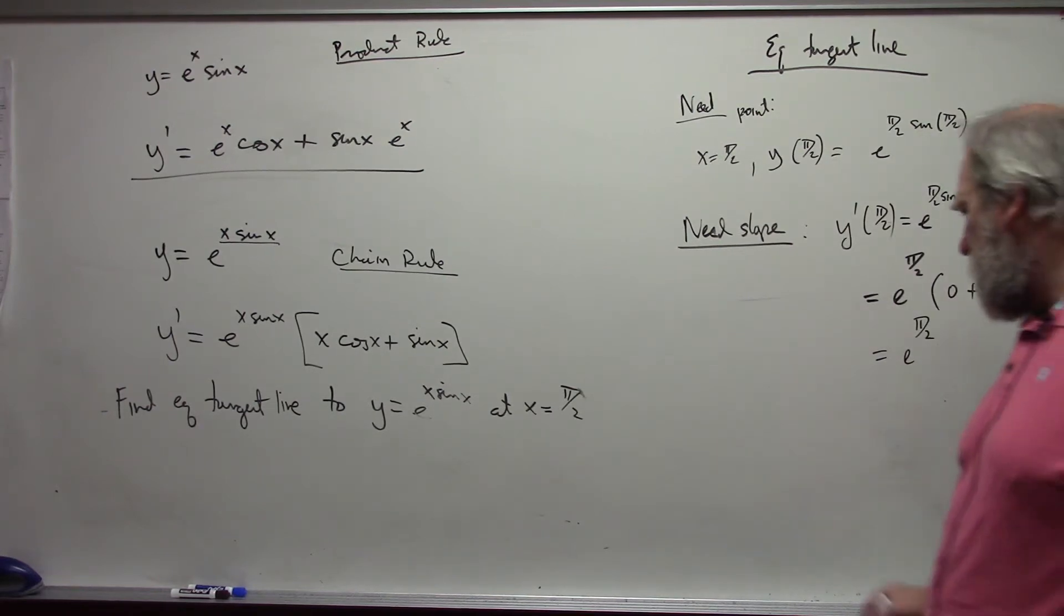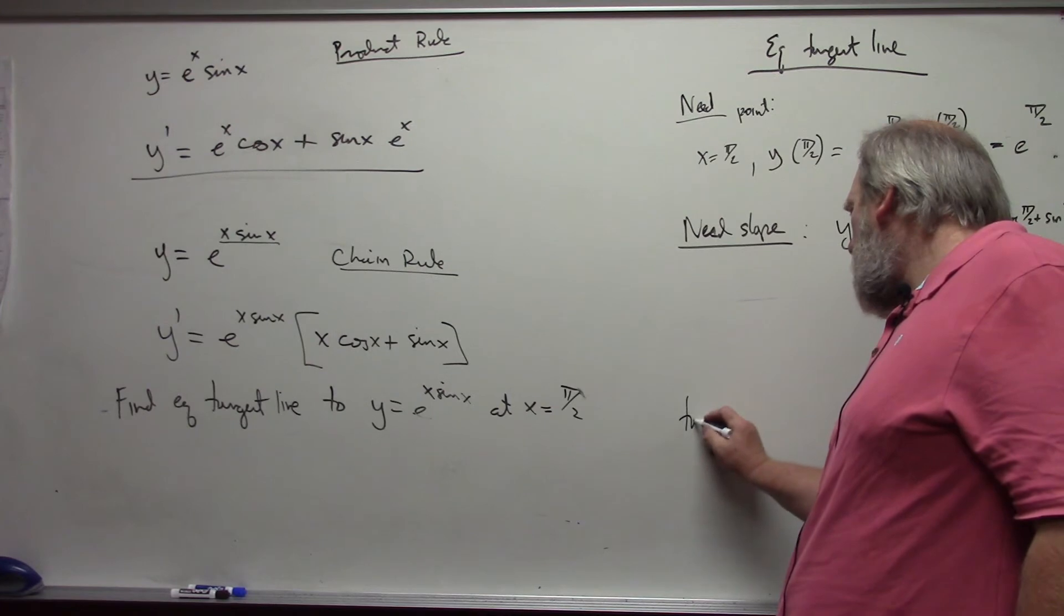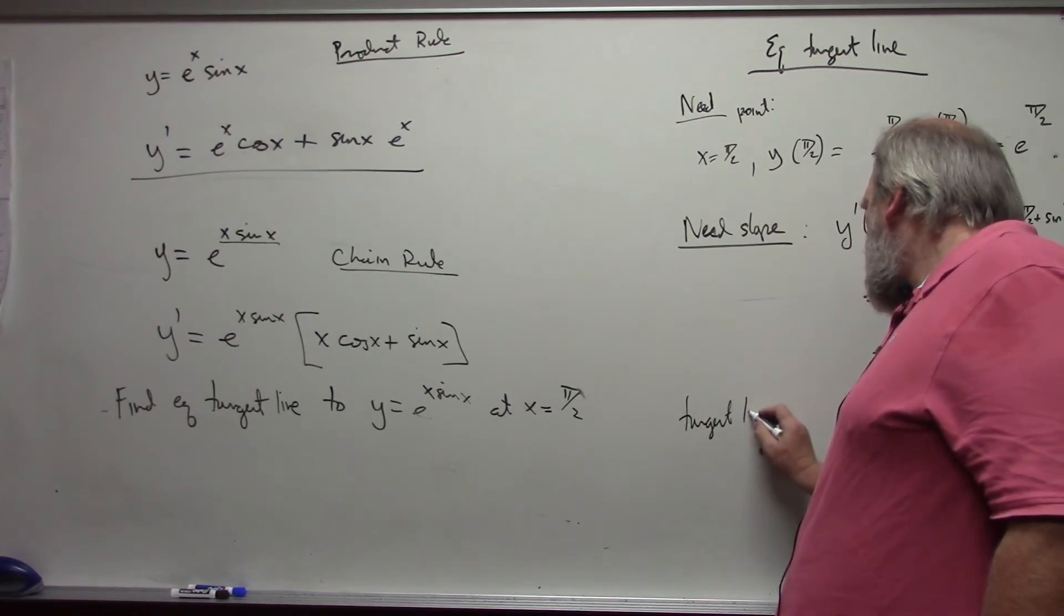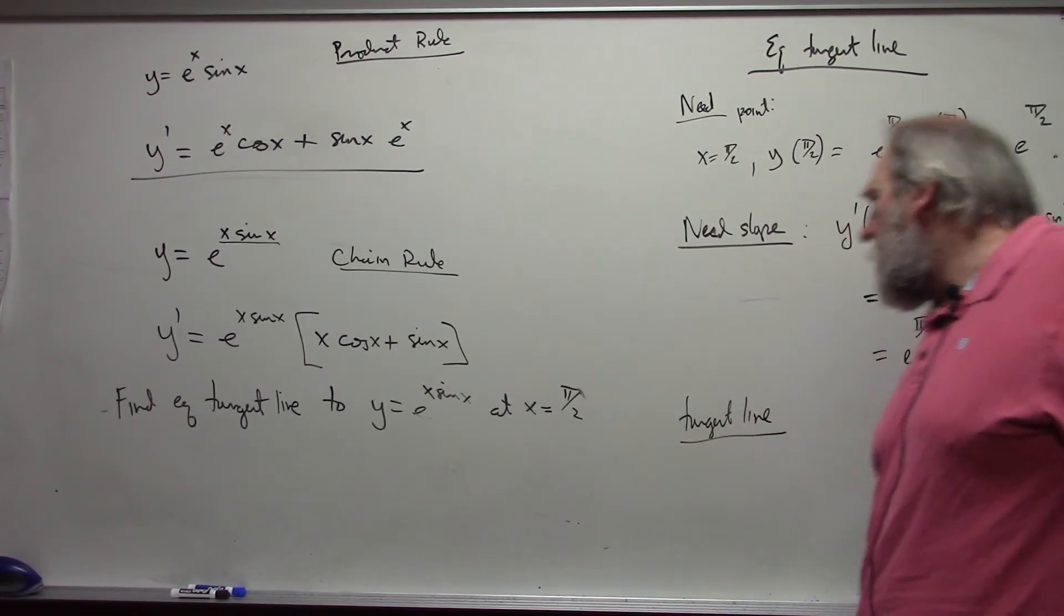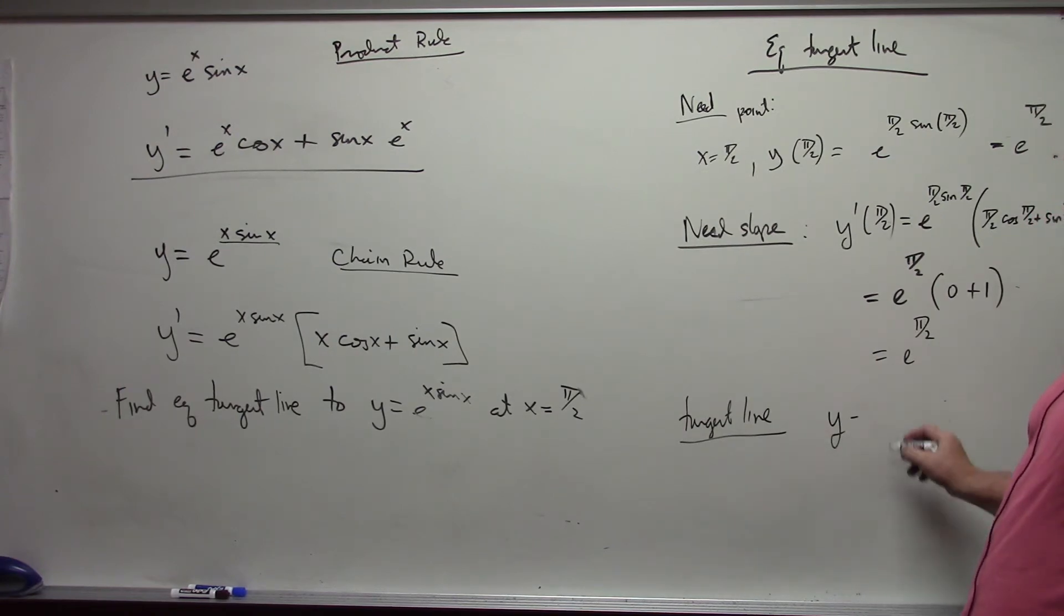Which means that the tangent line would have the form y minus e to the pi over 2 is equal to e to the pi over 2 times x minus pi over 2.